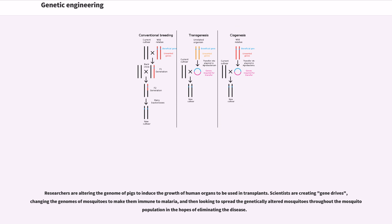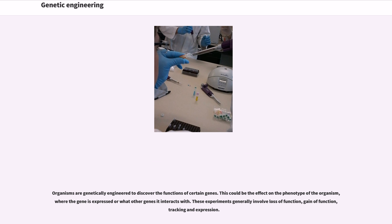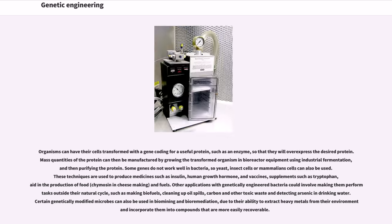Genetic engineering is an important tool for natural scientists, with the creation of transgenic organisms one of the most important tools for analysis of gene function. Genes and other genetic information from a wide range of organisms can be inserted into bacteria for storage and modification. Bacteria are cheap, easy to grow, clonal, multiply quickly, relatively easy to transform, and can be stored at minus 80 degrees Celsius almost indefinitely. Once a gene is isolated it can be stored inside the bacteria, providing an unlimited supply for research. Organisms are genetically engineered to discover the functions of certain genes, including the effect on phenotype, where the gene is expressed, or what other genes it interacts with. These experiments generally involve loss of function, gain of function, tracking, and expression. Organisms can also have their cells transformed with a gene coding for a useful protein, such as an enzyme, so that they will overexpress the desired protein.